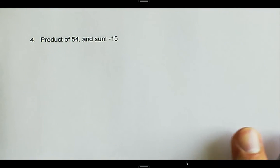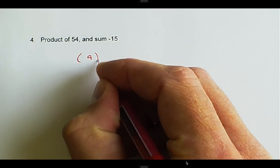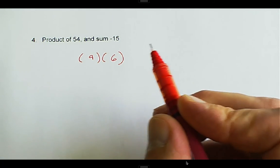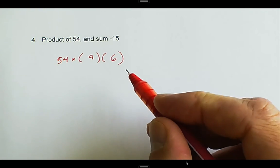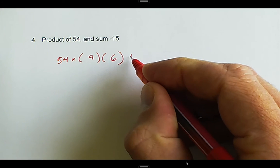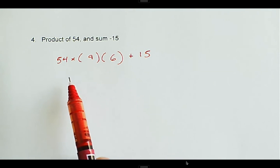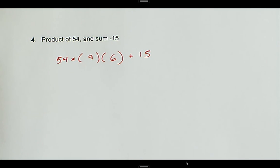In the last example, we have 54 and negative 15. If we're thinking about our multiplication tables, we should be thinking about 9 and 6. 9 times 6, that is 54, and 9 plus 6 is positive 15. In this case, we have the right number, but we have the wrong sign in front. So we can change the signs for both of these.